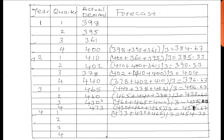For quarter 1 of year 4, we get the last three again: 473, 430, and 460, divided by 3, which gives 454.33. For quarter 2 and quarter 3 of year 4, we don't have actual data for the previous quarter 1 of year 4, so we assume the forecast repeats. The forecast for quarter 2 and quarter 3 of year 4 will both be 454.33.